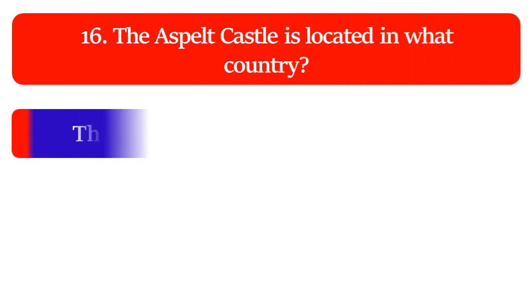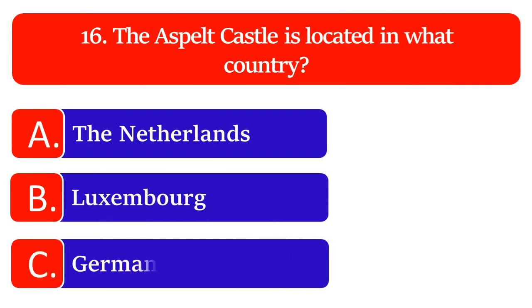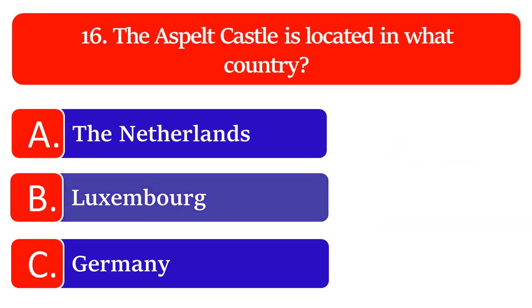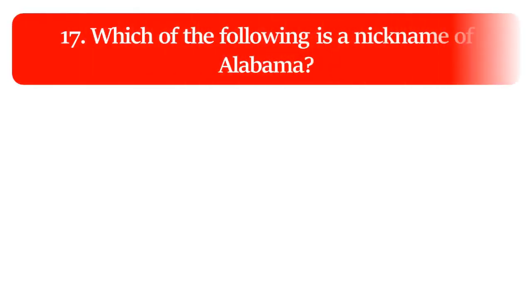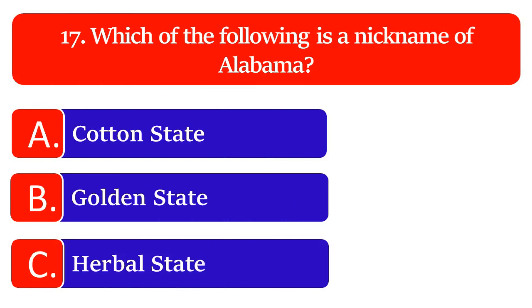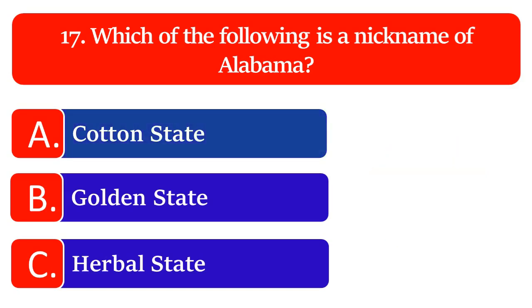The castle is located in what country: the Netherlands, Luxembourg or Germany? The great answer is Luxembourg. Which of the following is a nickname of Alabama: Cotton State, Golden State or Harbor State? The great answer is Cotton State.